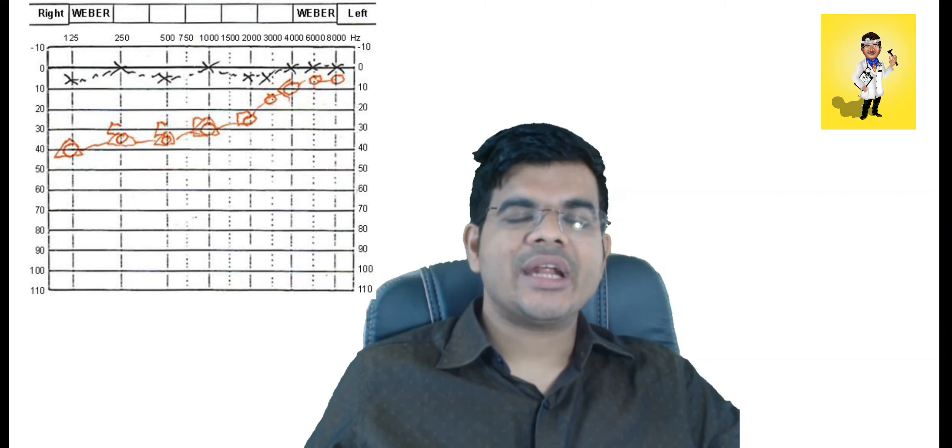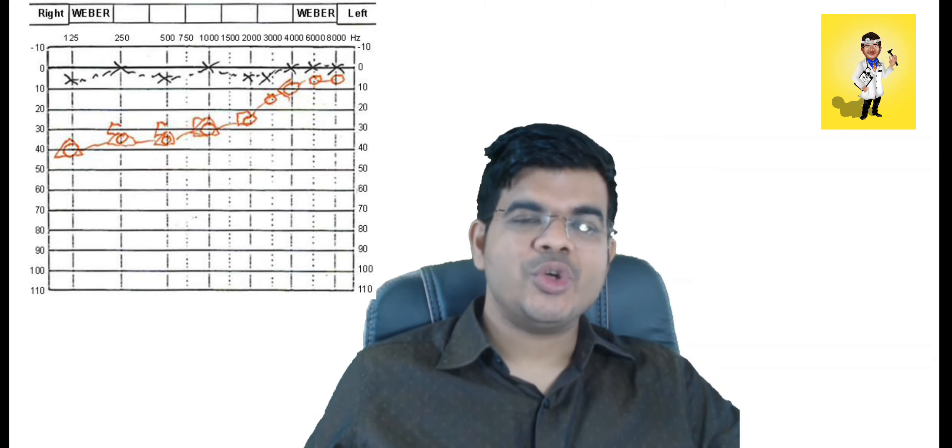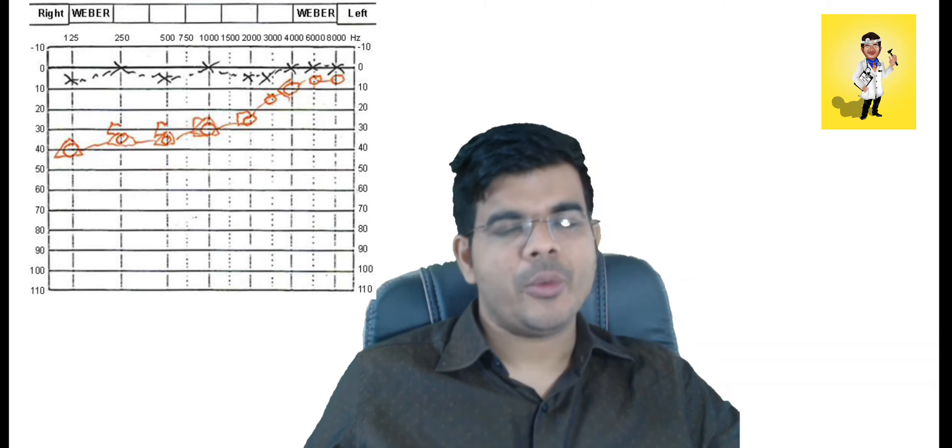The bone conduction curve should be higher than the opposite ear by more than 30 decibels in frequencies less than 2 kilohertz, assuming the other ear is normal.